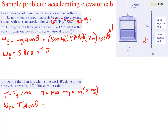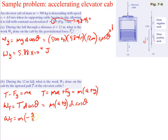Work due to tension is T times d times cosine theta. Plugging in our expression for tension, that's m times the quantity (a + g) times d times cosine theta. The acceleration is negative g over 5 because it's accelerating downward, so plugging that in gives m times (negative g/5 + g) times d cosine theta, which simplifies to four-fifths times mgd cosine theta.